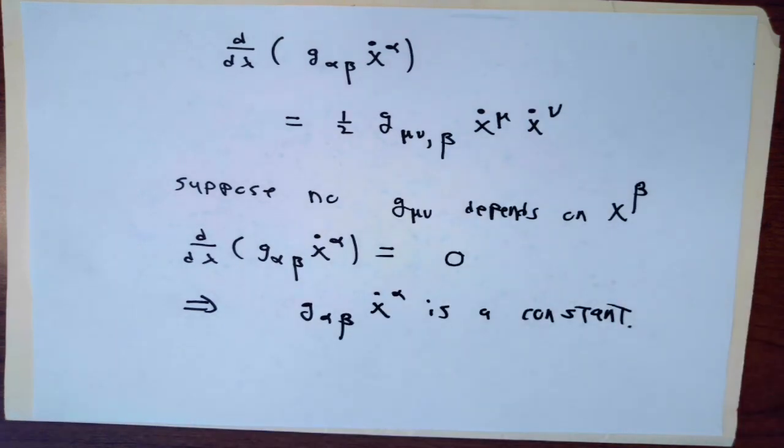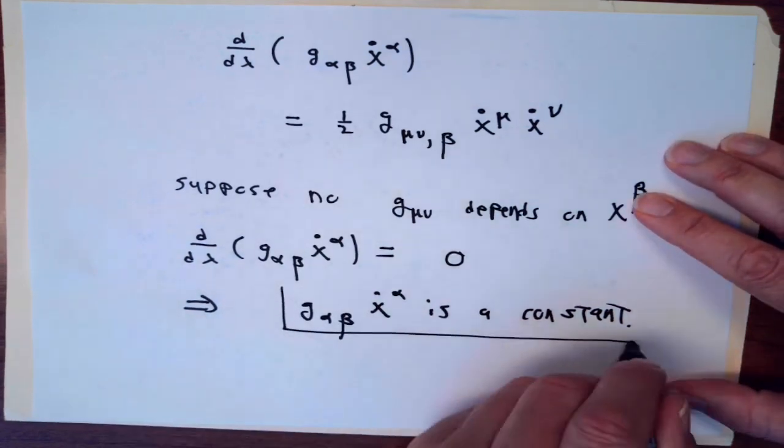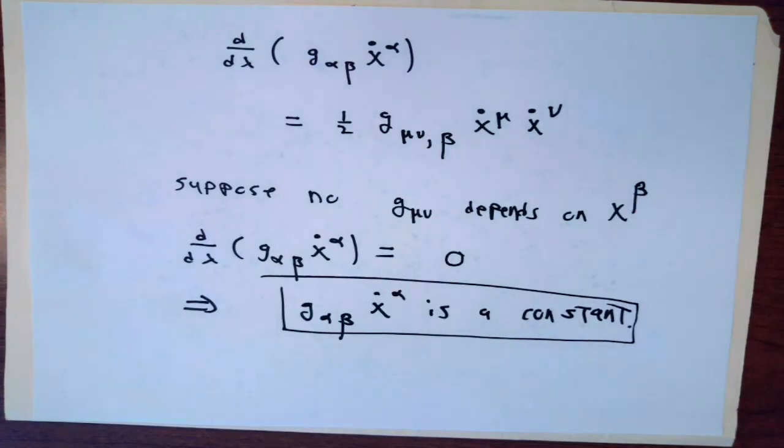So if I'm moving along a geodesic, and if no component of the metric depends on x number beta, then this quantity is a constant of the motion along the geodesic. In the case of a massive particle, it turns out that in the Schwarzschild metric, since no component depends on t or phi, it turns out that you get two conserved quantities. One of them is related to the energy. The other is related to the angular momentum. But all I wanted to do in this little video is to get this fact. So, coming soon, the photon death spiral of doom. I hope everyone's having a good day. I'll talk to you soon.